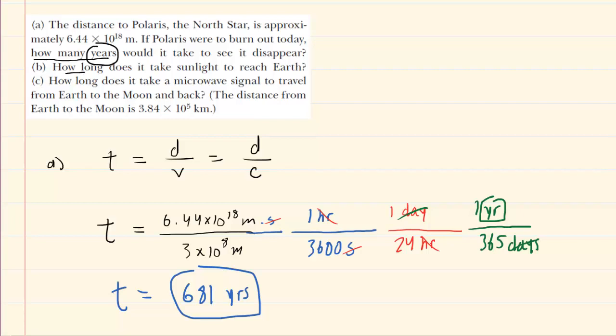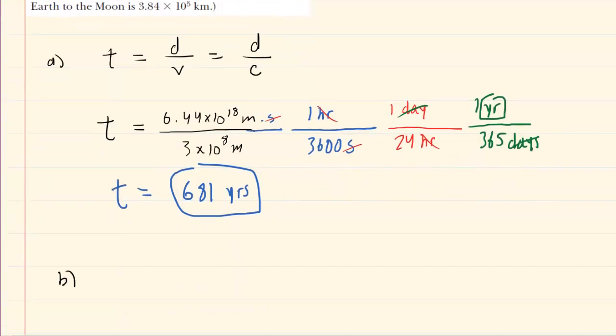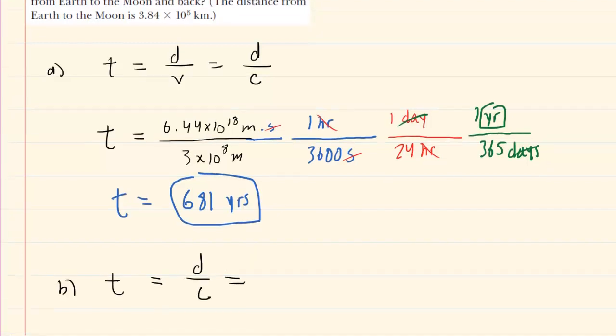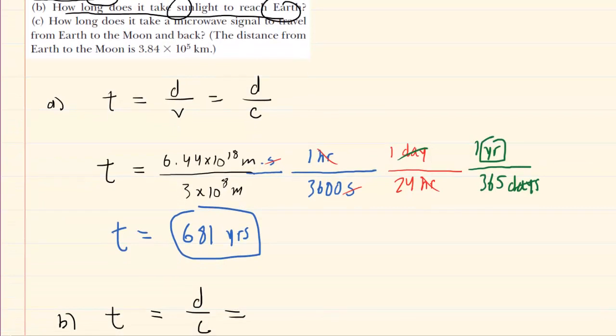Moving on to part B, we need to figure out how long it takes for sunlight to reach Earth. It's a very similar type of calculation. We're doing time equals the distance divided by the speed of light. We're going to have to look up the distance between the Earth and the Sun. That's probably a value given in your textbook. I looked it up and it happens to be 1.496 × 10^11 meters.